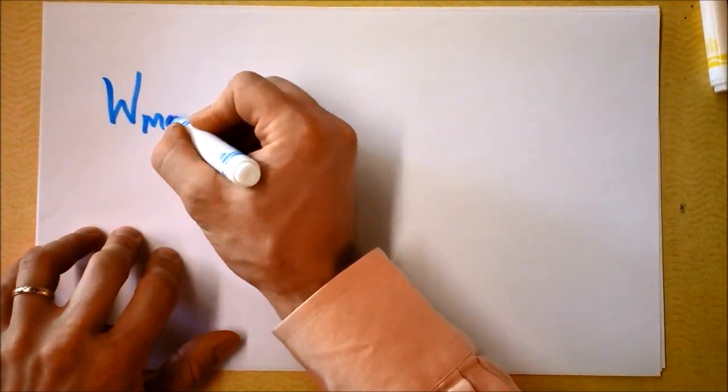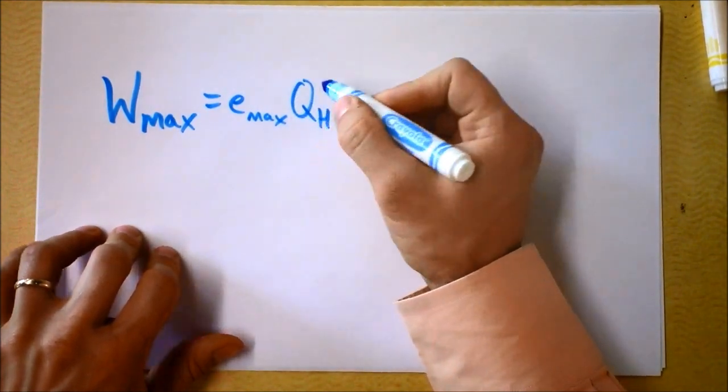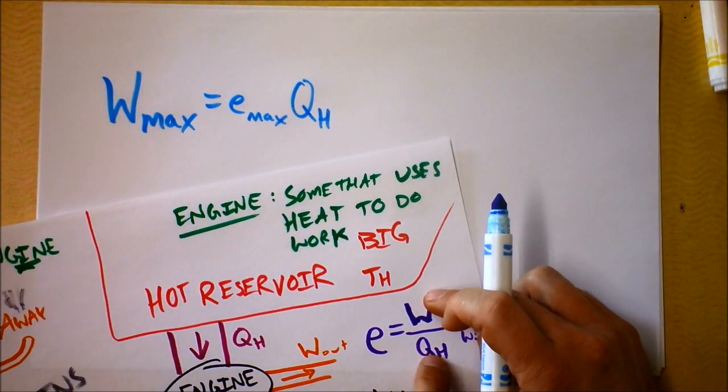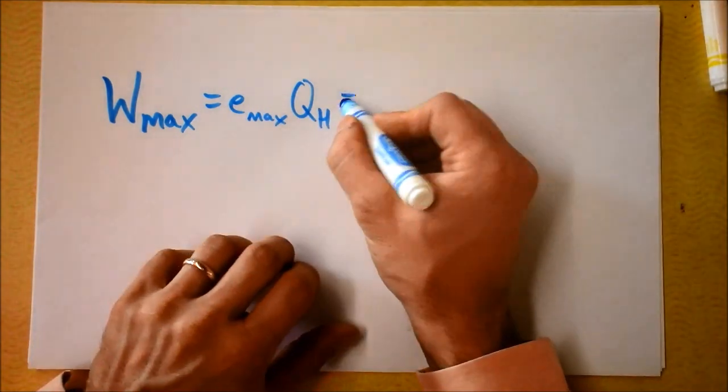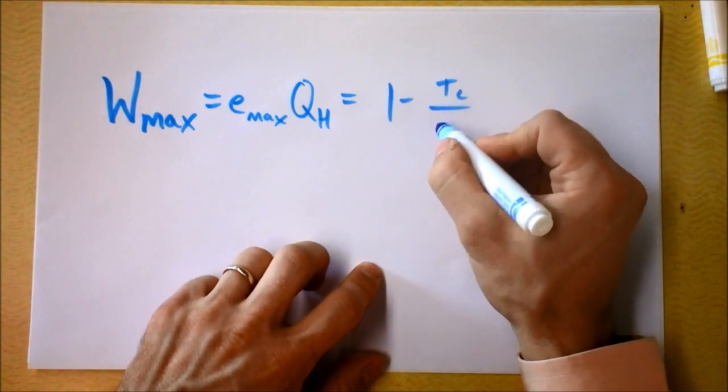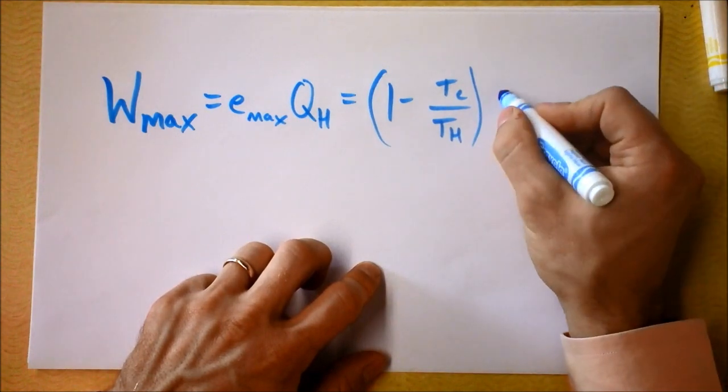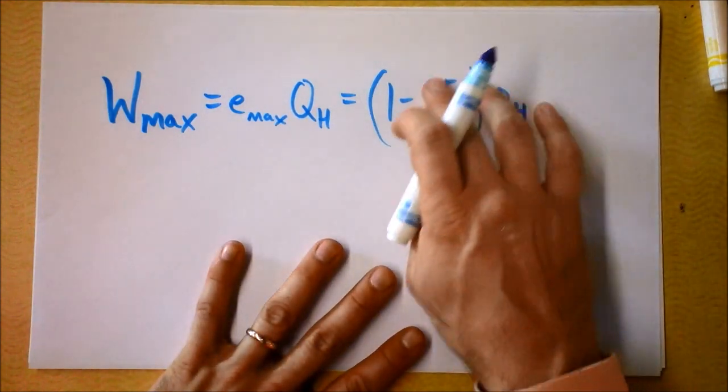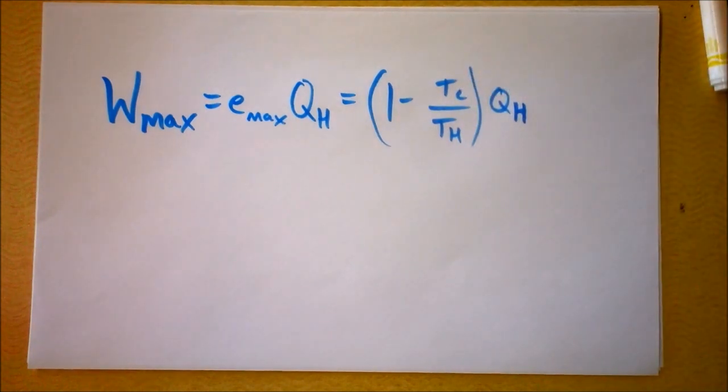If we know maximum efficiency, then we also know the maximum work that we can get out of an engine. So the work maximum that we can do is the maximum efficiency times the temperature of the hot reservoir. I'm just solving this equation for work, multiplying by QH on both sides. So the maximum work we can get out is 1 minus the temperature of the cold divided by the temperature of the hot, that efficiency multiplied by QH. That is the maximum work that you can get out of an engine, based on the constraints of the hot reservoir's temperature and the cold reservoir's temperature. Goodbye.